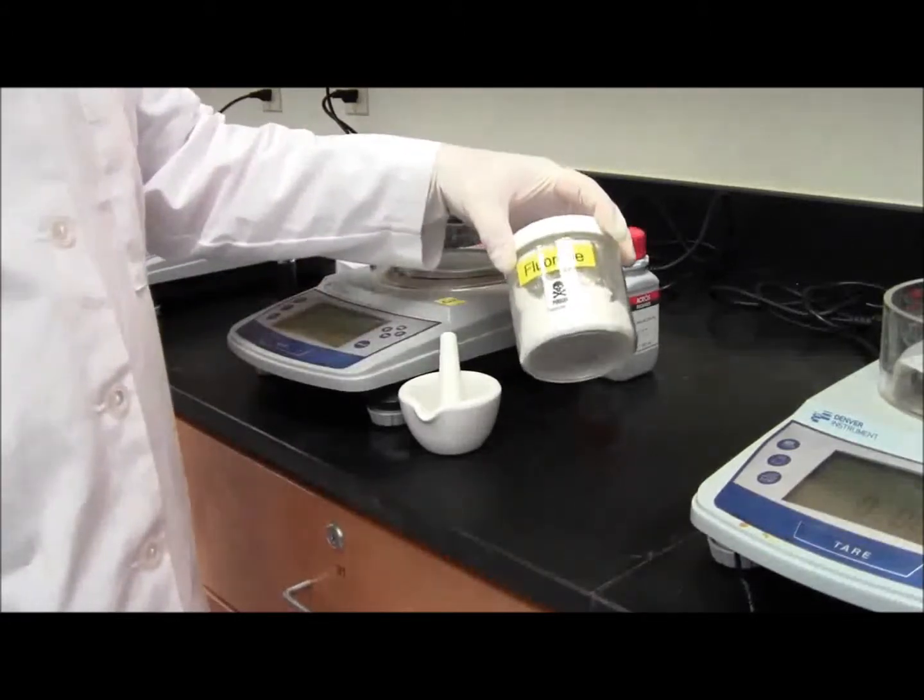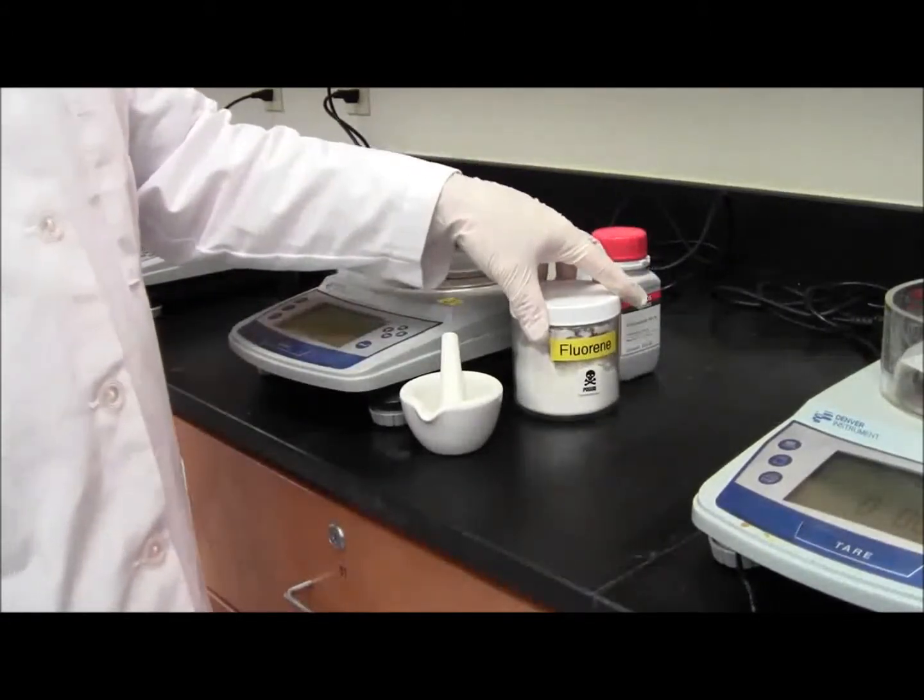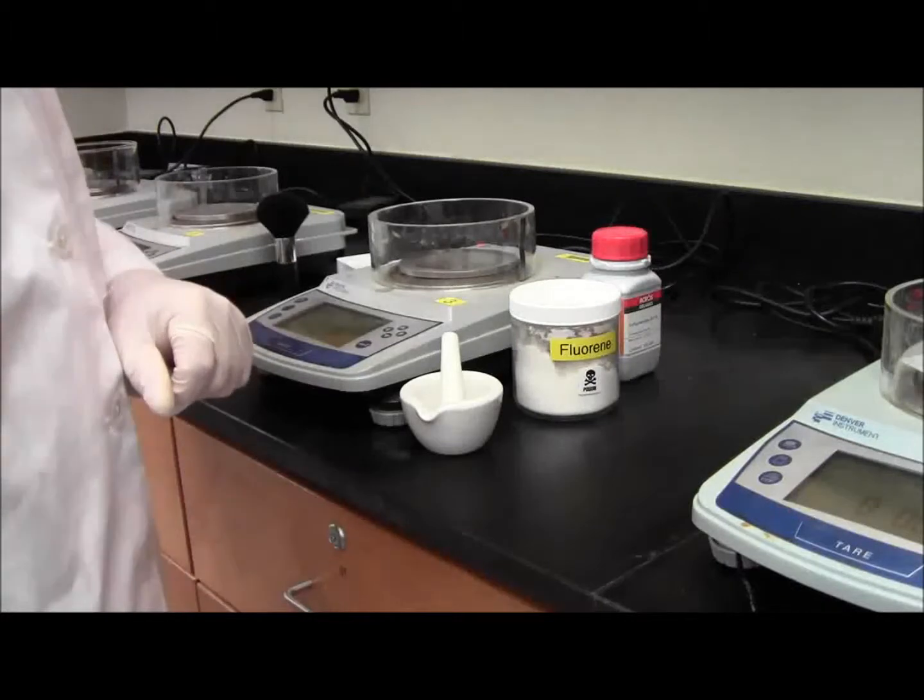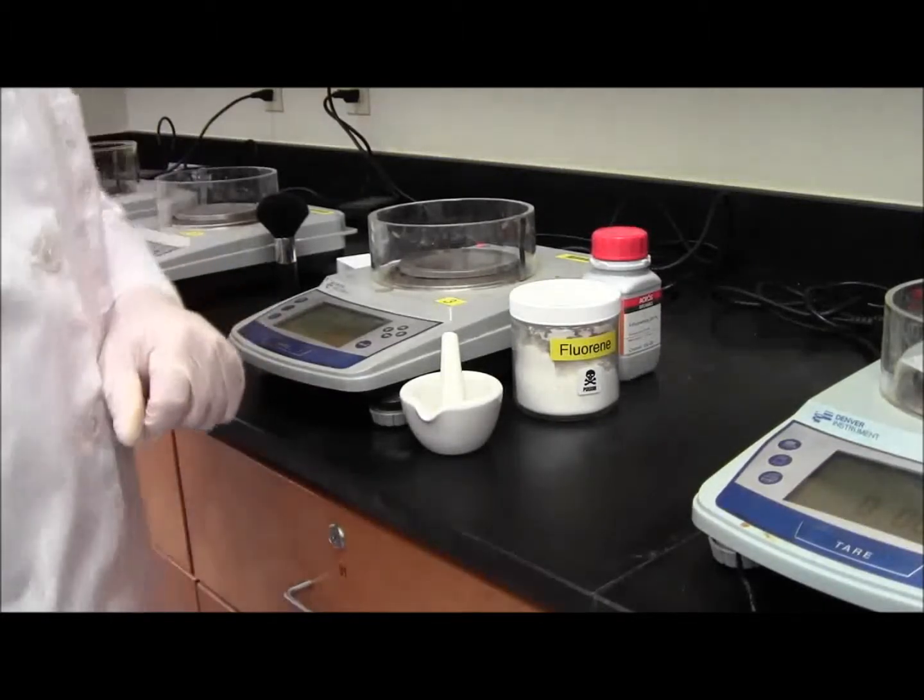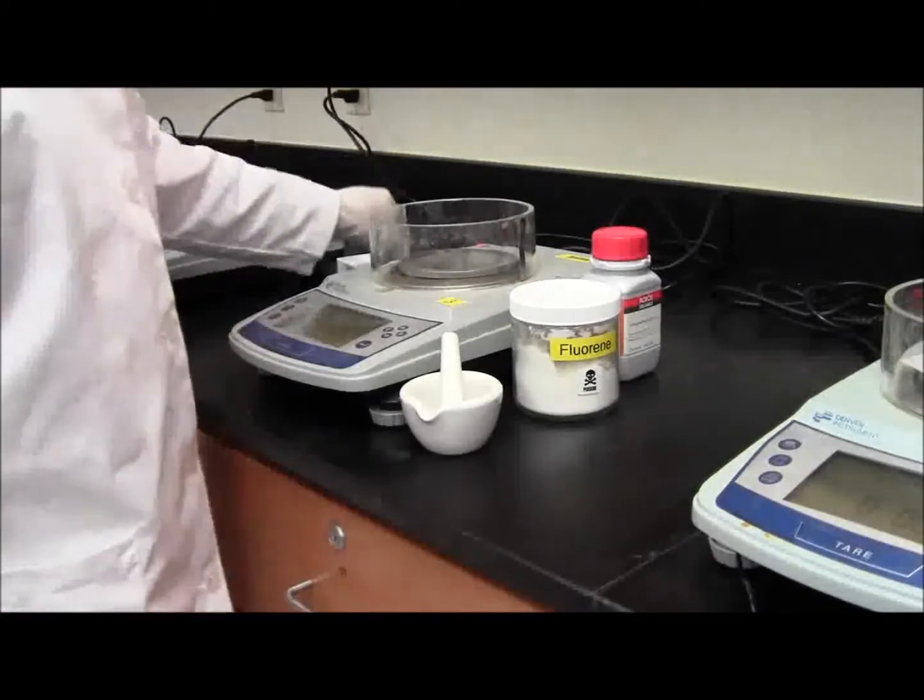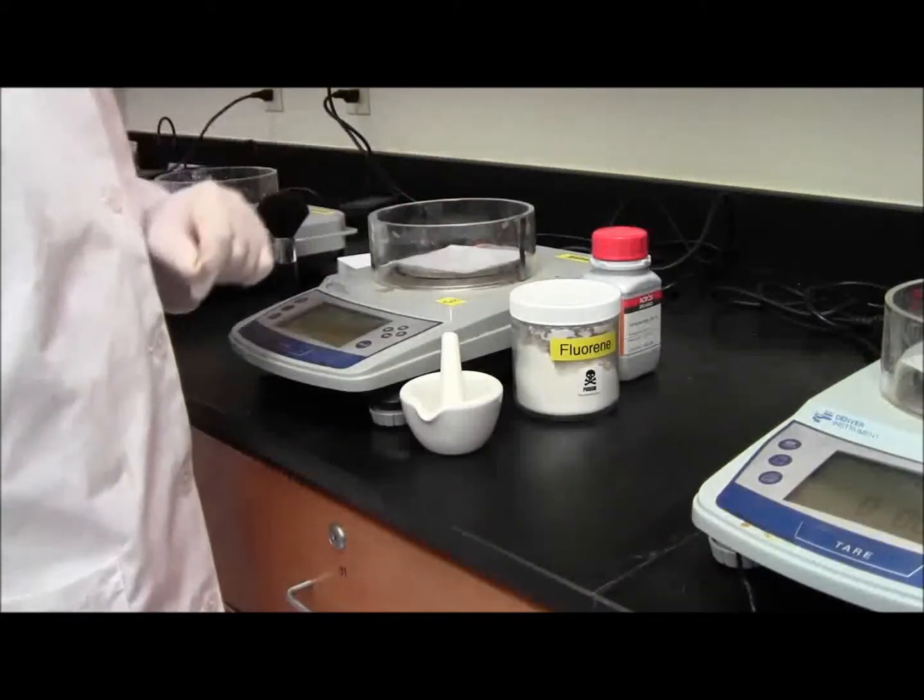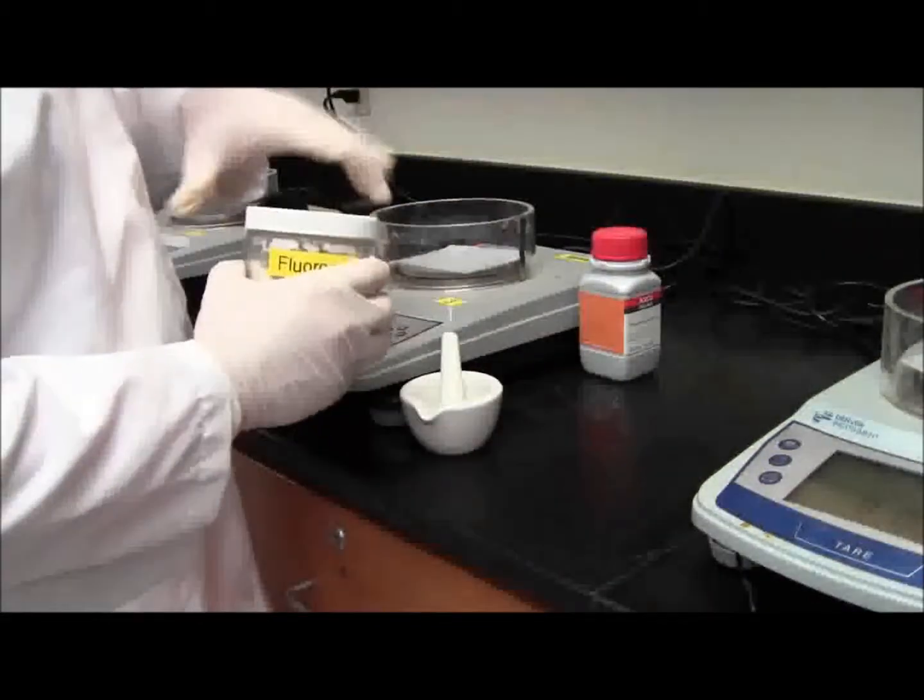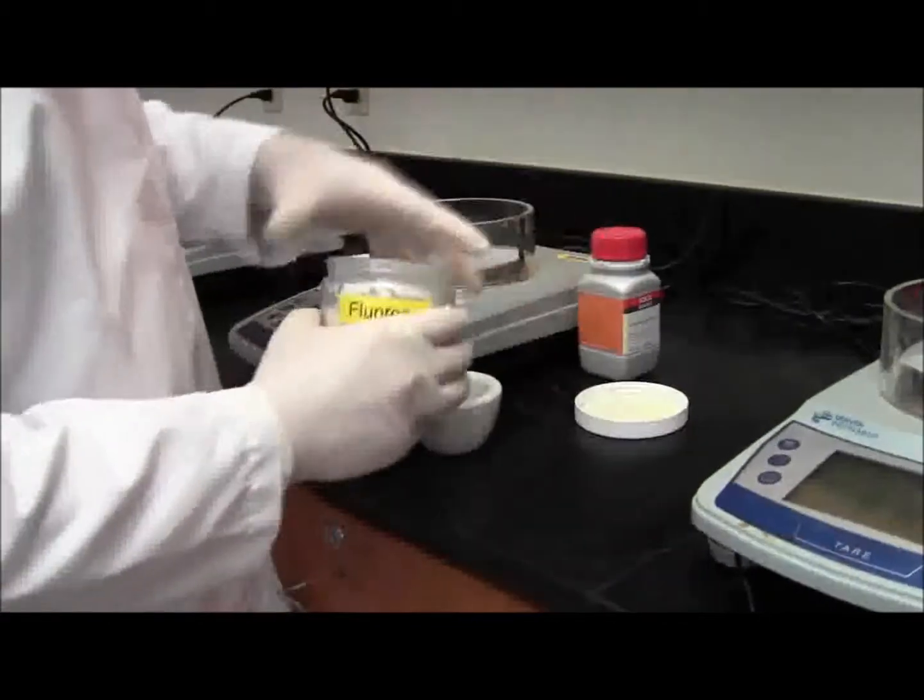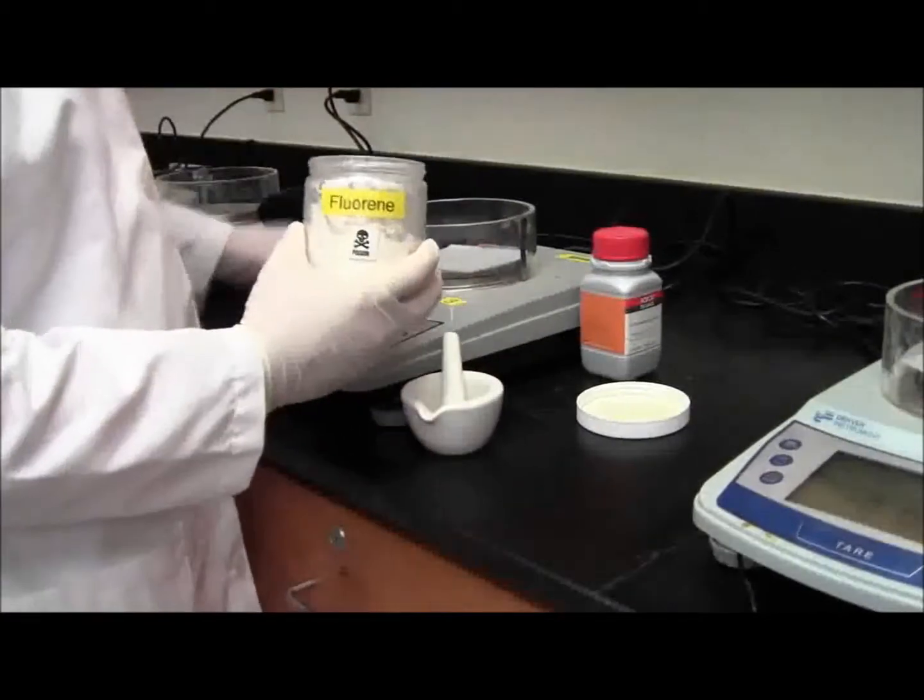The problem with the fluorene is that it clumps up with the moisture in the air. So we'll have to grind it a little bit, so it'll go into solution a little bit easier. Take a piece of weighing paper, tare it, and you're going to want to weigh out about 2 grams of the fluorene.